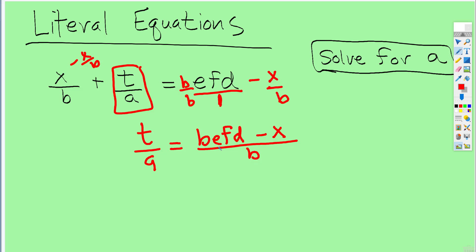Well, now we have a fraction equal to a fraction. But we want a to be in the numerator. So what can you do when a fraction is equal to a fraction? You can flip both sides. I'm going to change the e to black. So now we have a over t is equal to b over befd subtract x.